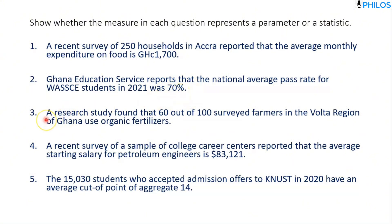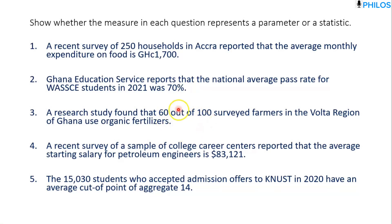Question three: a research study found that 60 out of 100 surveyed farmers in the Volta region of Ghana use organic fertilizer — that's 60 percent. This is just a survey of 100 farmers, which is a sample, not the entire population of farmers in the Volta region. So since this measure of 60 percent is based on a sample, not the entire population of farmers, it is a statistic, not a parameter.